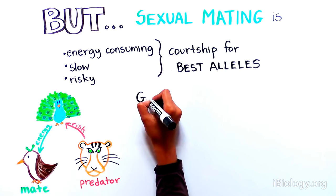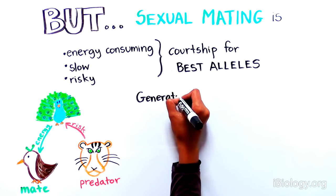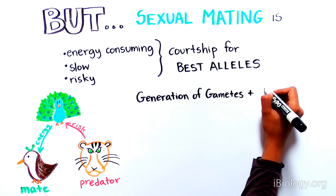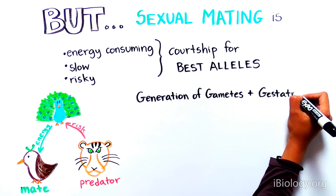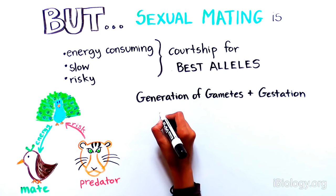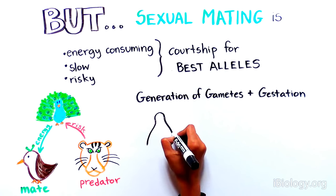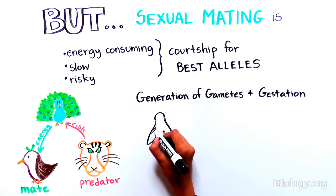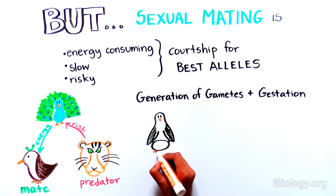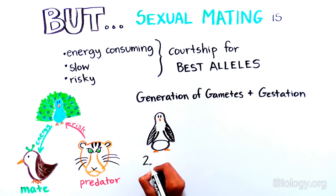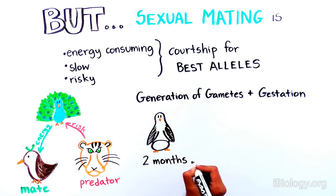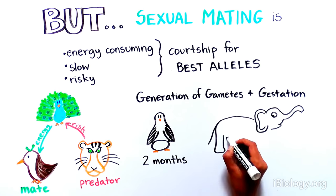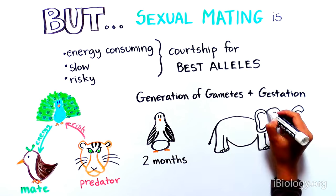In addition, the generation of gametes for sexual reproduction and the subsequent gestation and incubation take time and energy. For example, emperor penguins must sit on their eggs for over two months and elephants can be pregnant for almost two years.